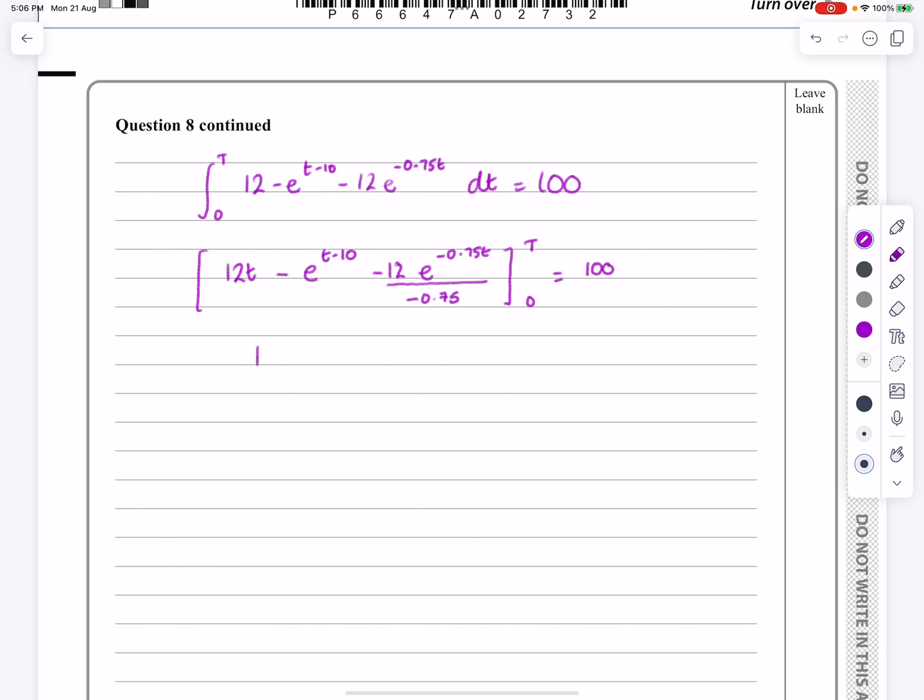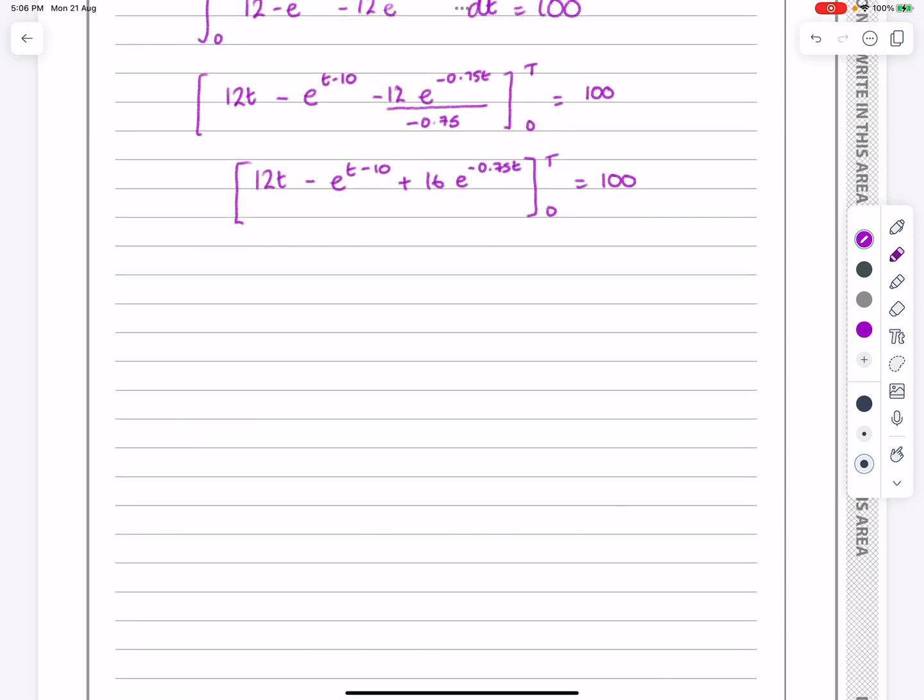If we're going to integrate this whole thing, well, the integral of 12, that's just 12t. The integral of e to the t minus 10, it'll be e to the t minus 10 divided by 1, so that's fine, that's no problem at all. The next one is going to be e to the minus 0.75t, but we've now got to divide by minus 0.75. That all works out to be plus 16e to the minus 0.75t. All between T and 0 equals 100.